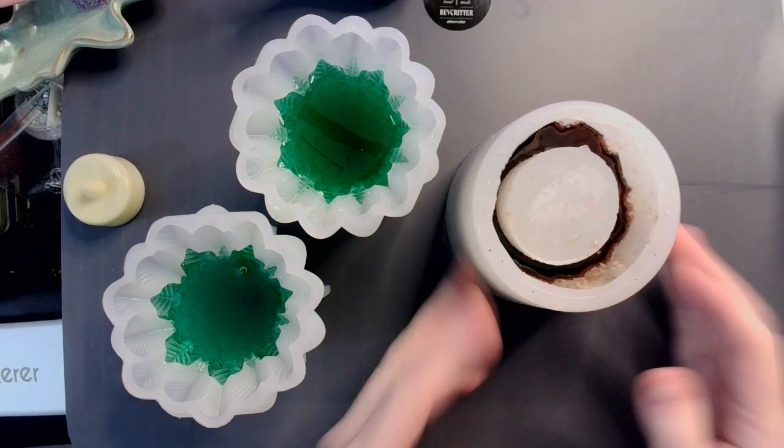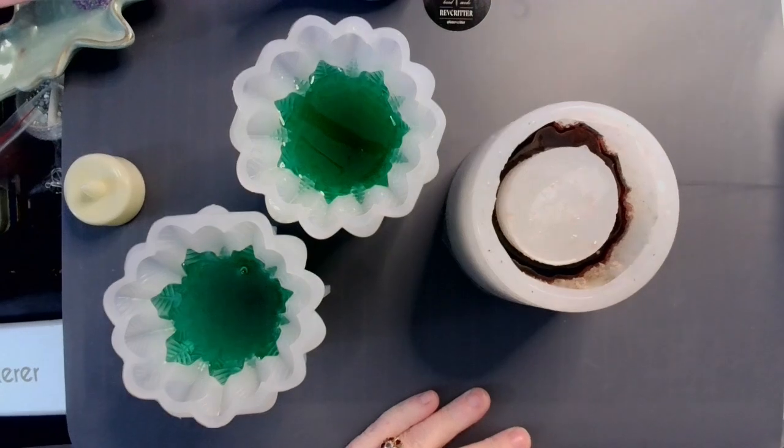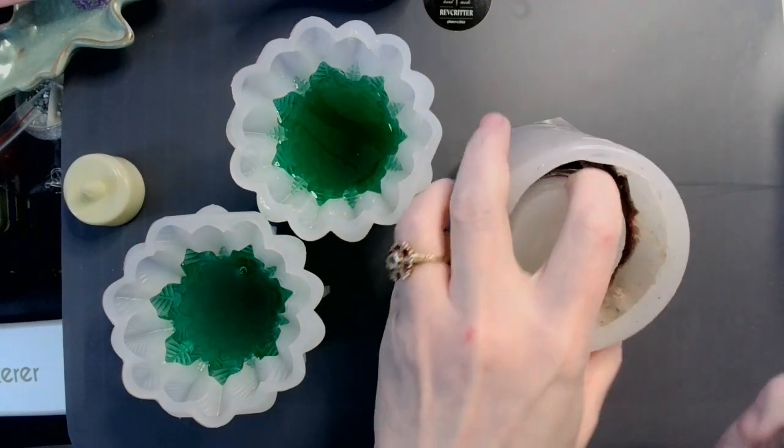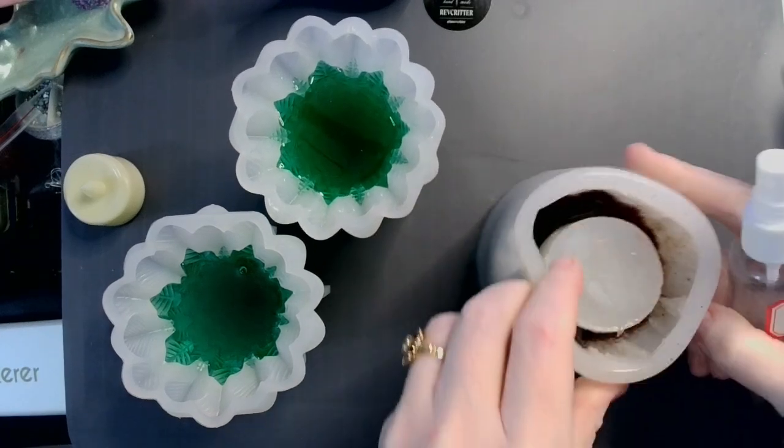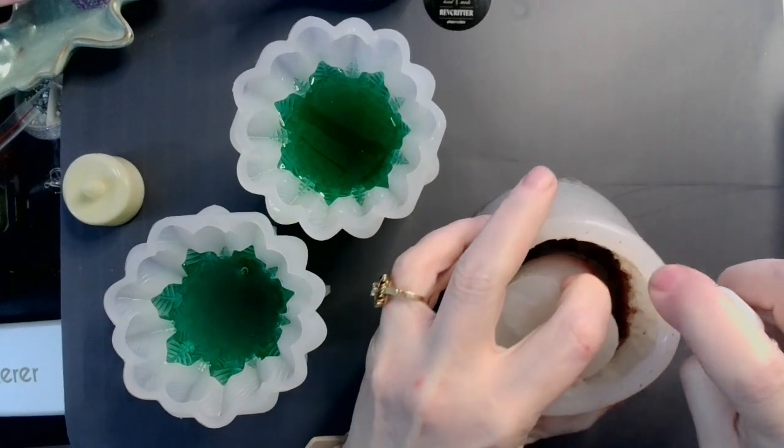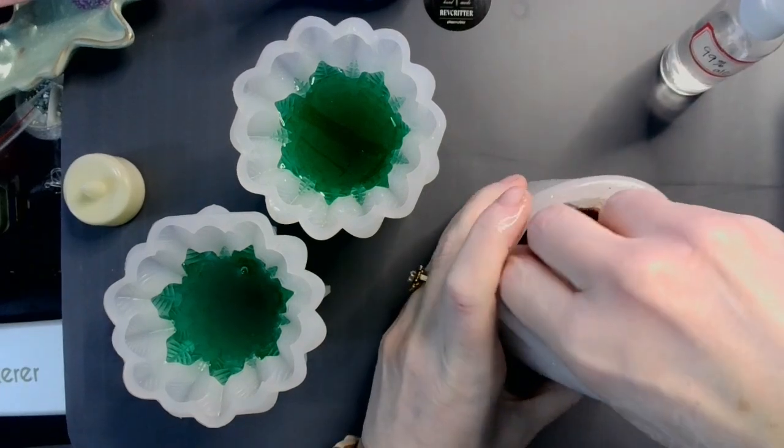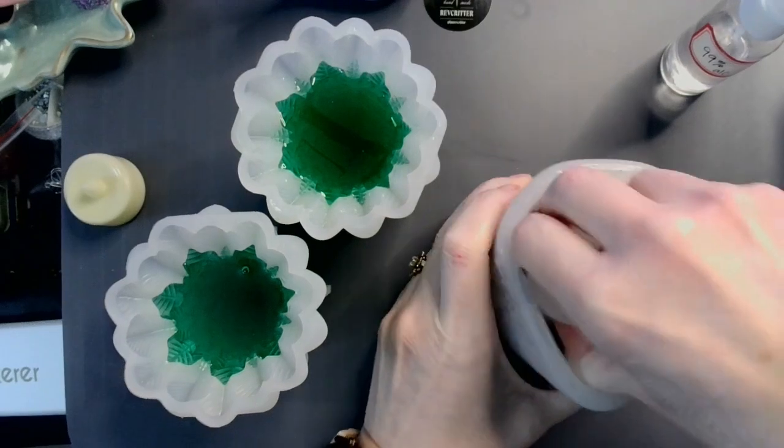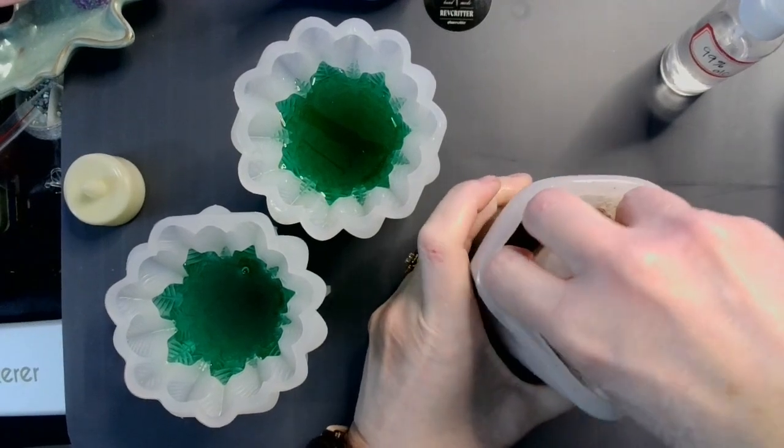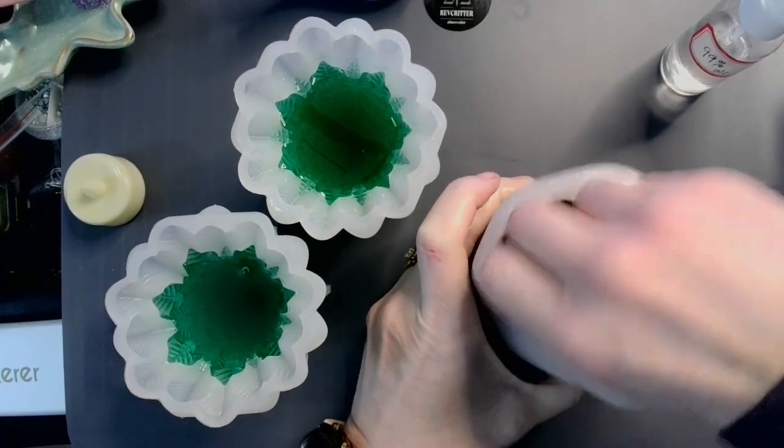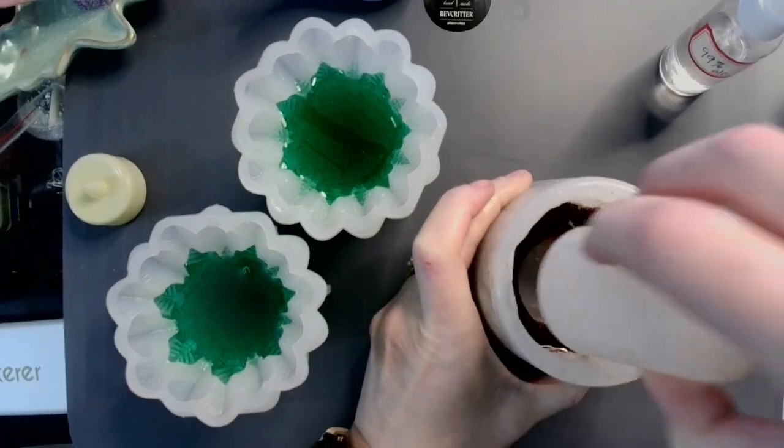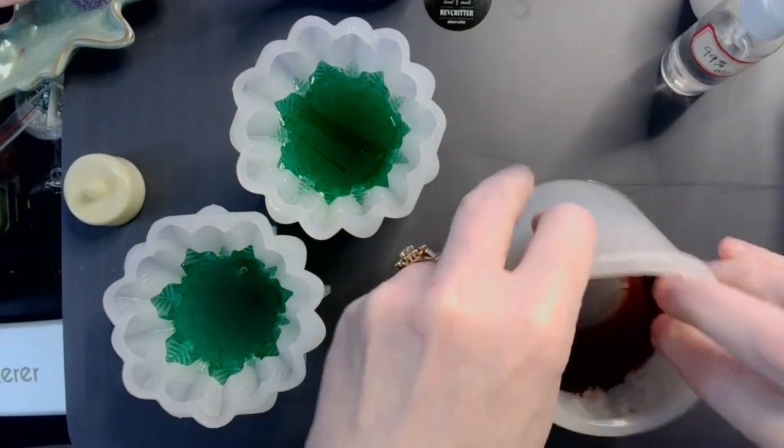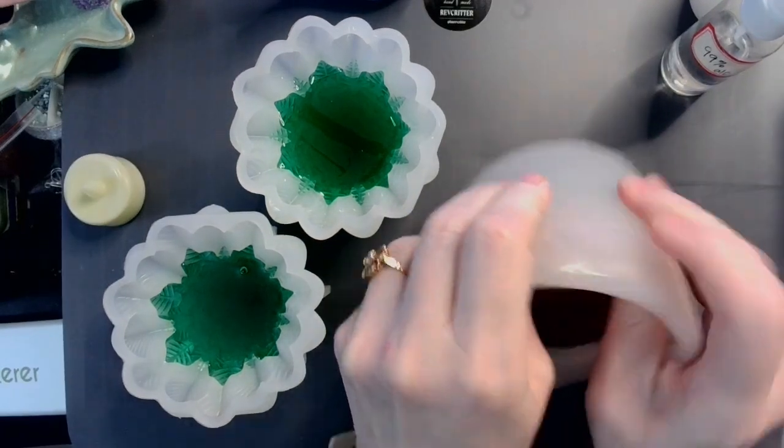All right, let's make a tree, shall we? Now let's start with our base. I am going to spray in some alcohol just to make it easier to get the center bit out. I'll circle that around a little bit. There we go. Ta-da! And then take out the outside.